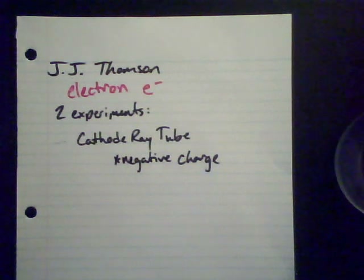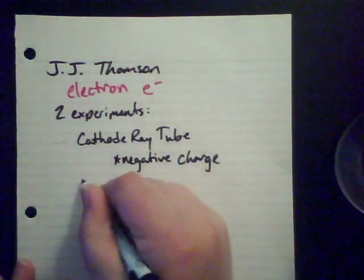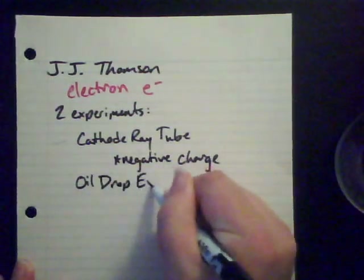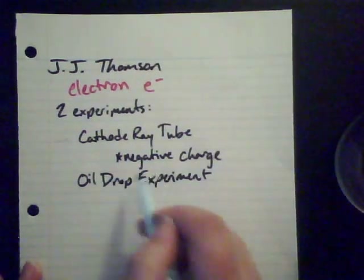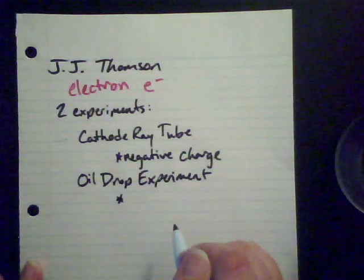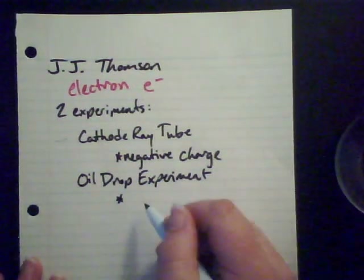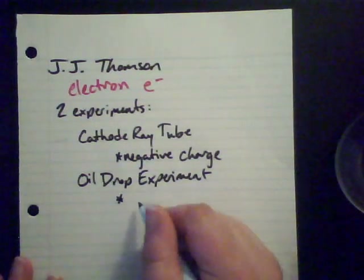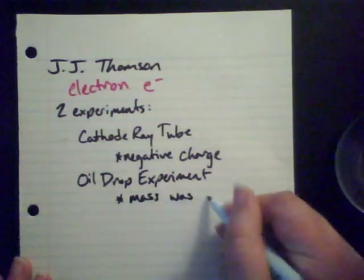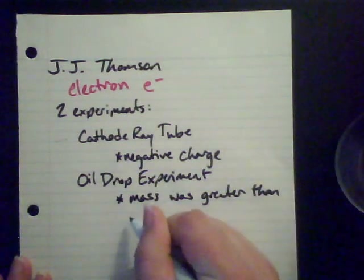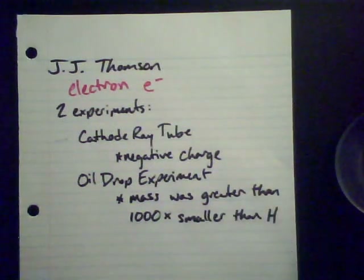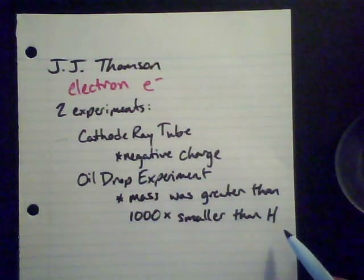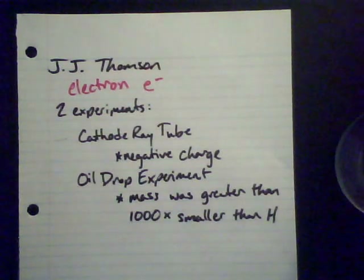So it has a minus charge. Then he did another experiment with a man named Millikan — the oil drop experiment. In the oil drop experiment, he figured out the mass of this particle found in cathode rays. He found that the mass was over a thousand times smaller than the mass of a hydrogen atom. That's a pretty significant discovery because the smallest known atom is hydrogen — number one on the periodic table.